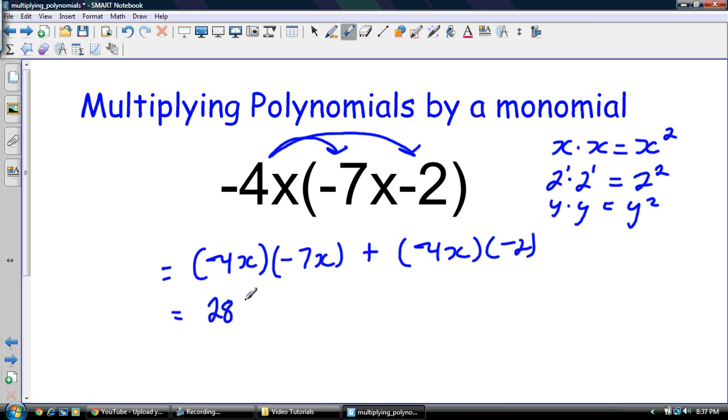Now, so that's going to be x times x, so that's x squared. Then I'm going to have my negative 4 times my negative 2, that's 8. And then I have x, well, I can't multiply x by anything here, so I'm going to have 8x. And that is my polynomial when I have multiplying by a monomial.